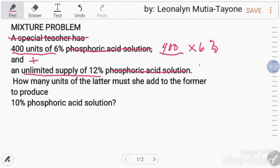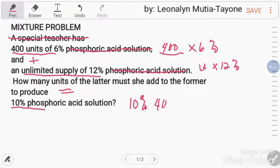So the unlimited, let's say U times 12%. Question: how many units of the latter must she add to the former to produce 10% phosphoric acid? 10% of phosphoric acid times 400 plus, this is what we're looking for. So, this is now the equation.